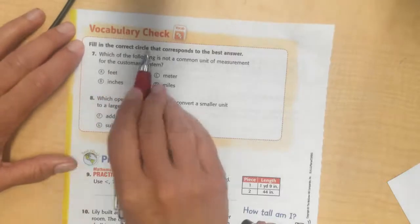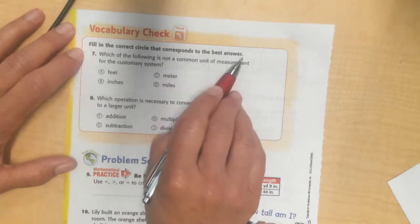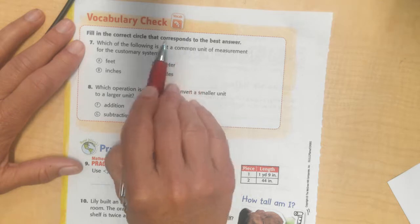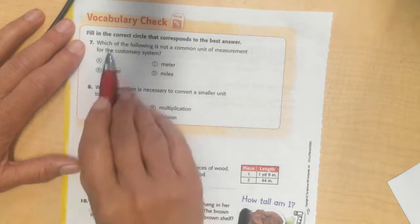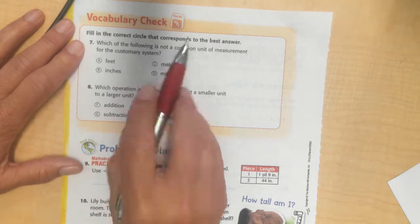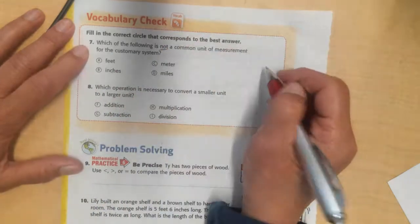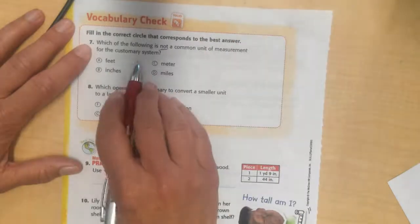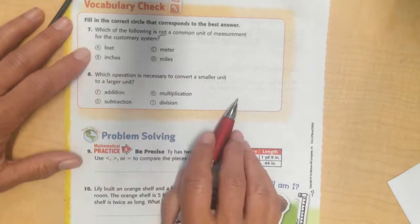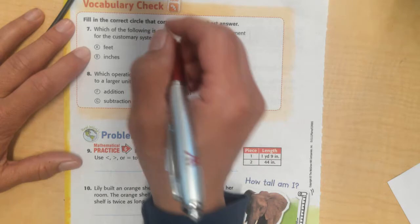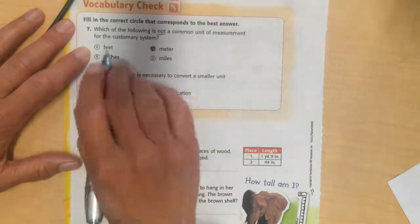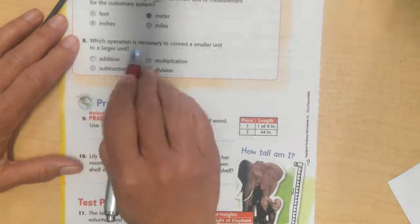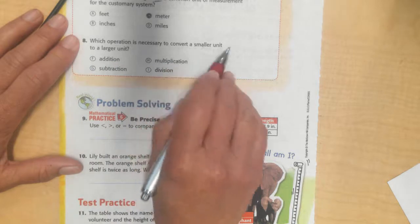On the back, fill in the correct circle that corresponds to the best answer. Did you know if I get mail in the mailbox, I also call it correspondence. It's when I answer something. This one, it means it's fitting together here. Which of the following is not a common unit of measurement for the customary system in the United States? It's not really common to use meters. We use feet, we use inches, we use miles. We don't use meters as much. Sometimes we do.